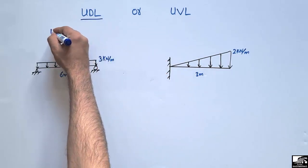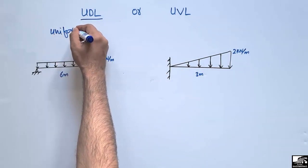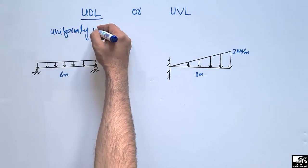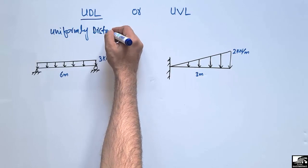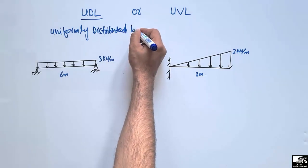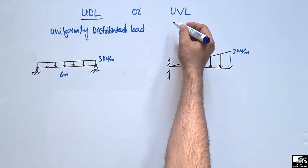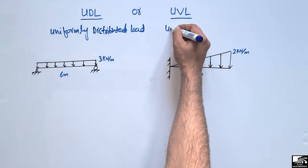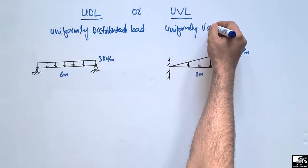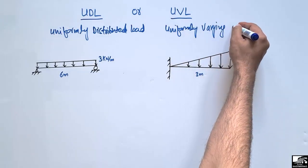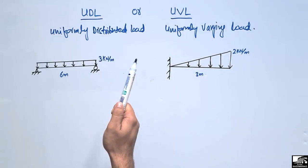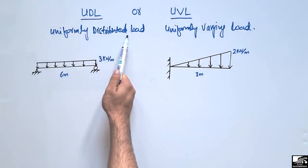UDL stands for uniformly distributed load, which is the load acting on the beam, slab member, or any structural member. UVL stands for uniformly varying load.